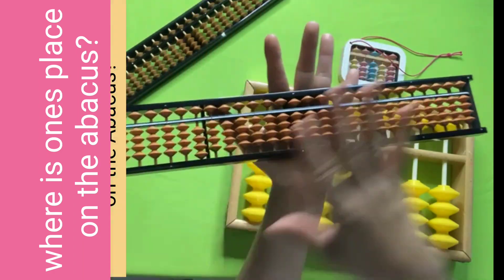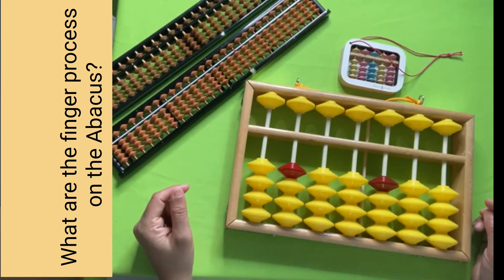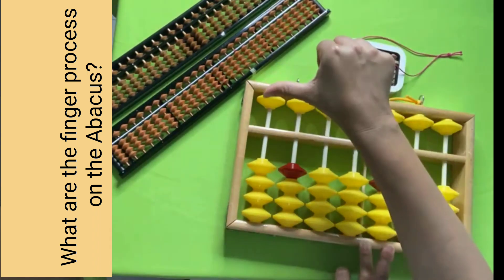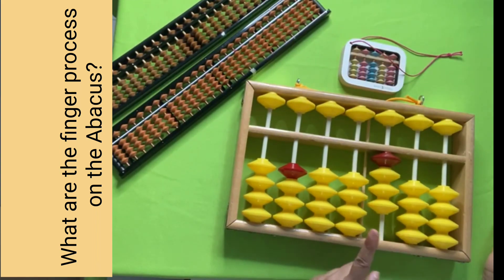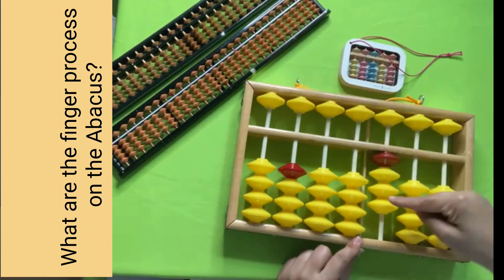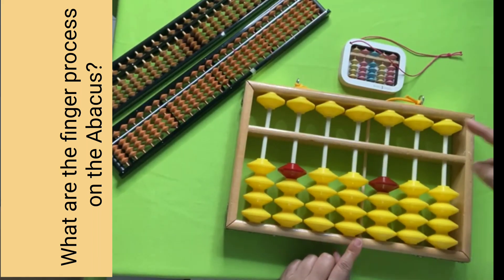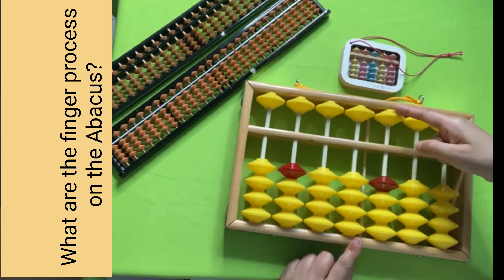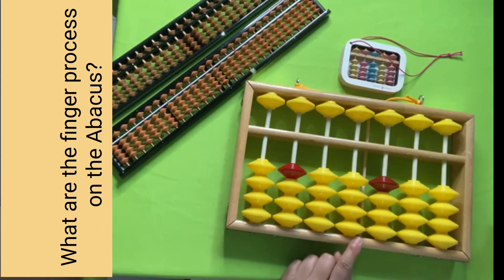What are the finger processes on the abacus? To move down bits up, use your thumb. To move down bits down, use your pointer finger. To move up bits down and up, use your pointer finger. This is the finger process.